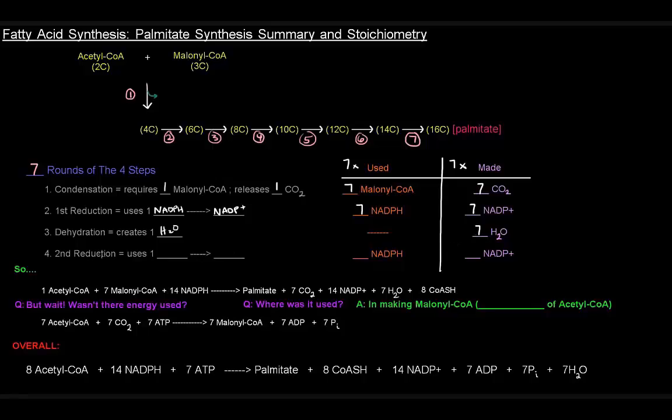In the second reduction, what it uses and creates is identical to the first reduction. We have NADPHs and NADP+, seven and seven, just like the first reduction.